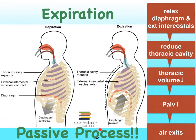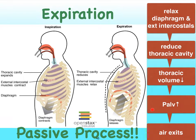Expiration, on the other hand, is a passive process. In the case of expiration, we simply relax the diaphragm and relax the intercostals. When we do that, we reduce the size of the thoracic cavity — going from a distended thoracic cavity to a much smaller one — which reduces its volume. The inverse relationship between volume and pressure means that pressure inside the lungs increases, allowing air to exit along its pressure gradient.